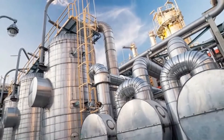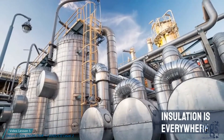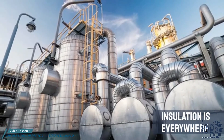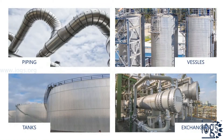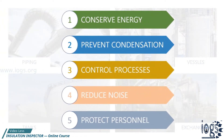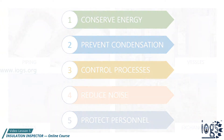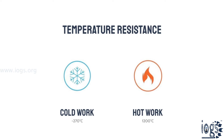When you walk around an industrial process plant, you can see thermal insulation installed everywhere. The piping, vessels, heat exchangers, and tanks of an oil refinery, chemical, or petrochemical plant are insulated to perform one or more functions. For cold insulation work, the insulation materials can resist temperatures up to minus 270 degrees Celsius.